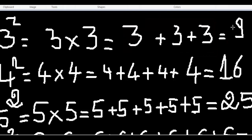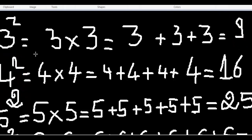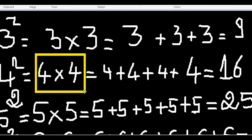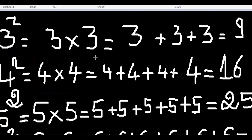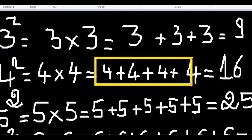Now four squared. Four times four means four plus four plus four plus four. You can see one, two, three, four — four times four equals 16.